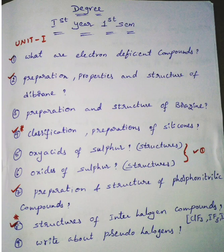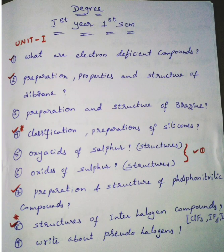In the fifth and sixth questions, he is asking one question on oxy acids and oxides — maximum one question from those two. Silicones are very very important, and interhalogens are also very important. Specially CLF3, IF5, and IF7 structures are asked, and sometimes pseudo halogens also. Total nine questions are very important, with a minimum of five expected repeated questions.